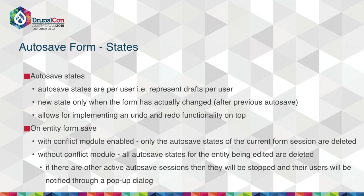Autosave states are per user, which means they are not shared and they represent drafts. A new state will be created each time a change is made, so if there are multiple autosave submissions but the page hasn't changed, there will be no new autosave states. This makes it possible to implement an undo functionality on top of it. The module behaves differently on entity saves depending on whether the Conflict module is enabled or not. If it's enabled, only the autosave session for the current user and entity will be deleted. Otherwise, all autosave sessions for this entity will be deleted, because otherwise the user will not be able to save the form — without Conflict, we cannot resolve conflicts, so concurrent editing is not possible.